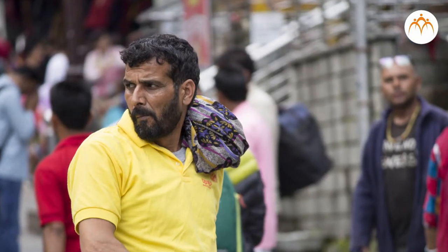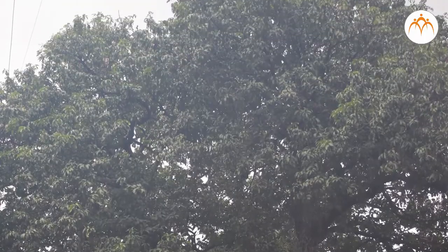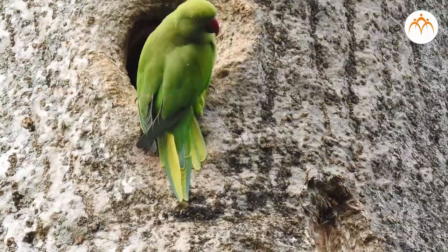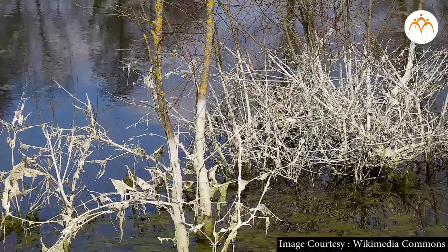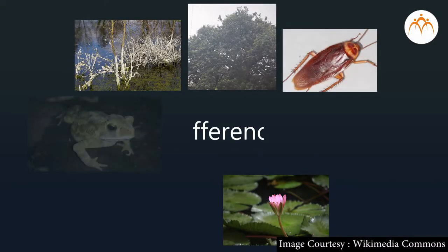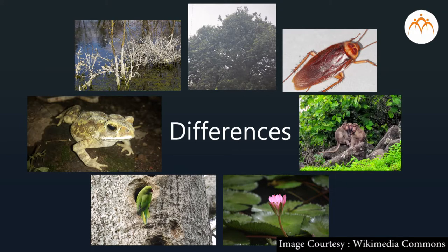Students, we see a variety of organisms around us, for example man, mango tree, monkey, cockroach, frog, parrot, spirogyra, etc. Now if you start observing them, you will realize that they look different, their food is different, and so on. So if you have to study them, will it be possible? It is really difficult.